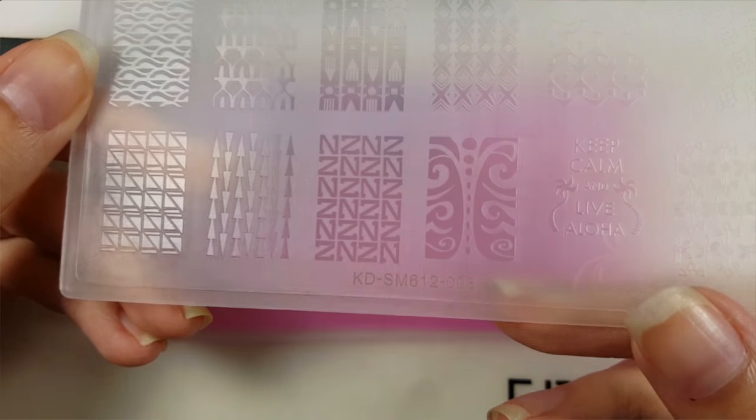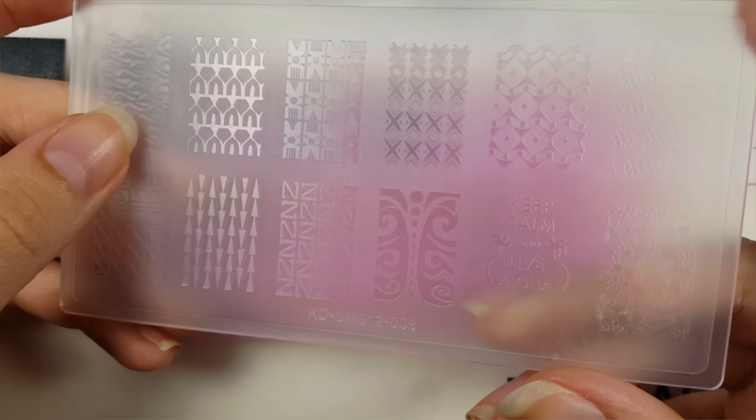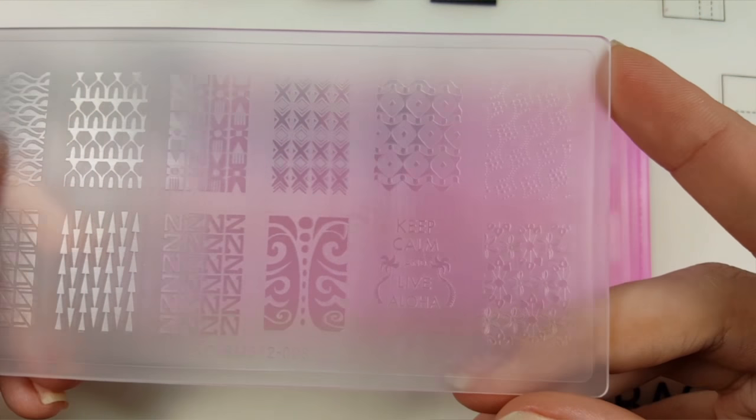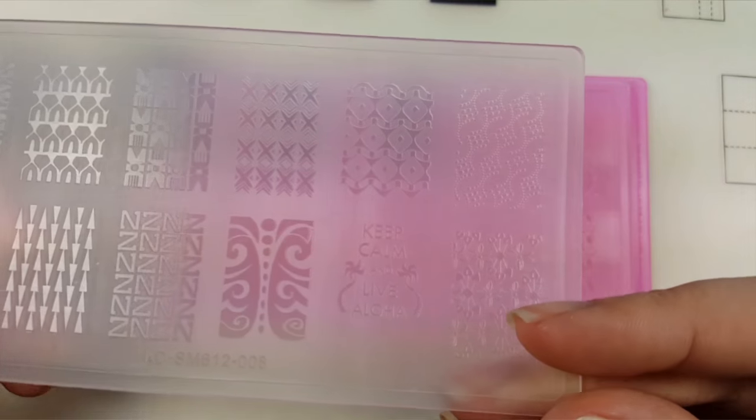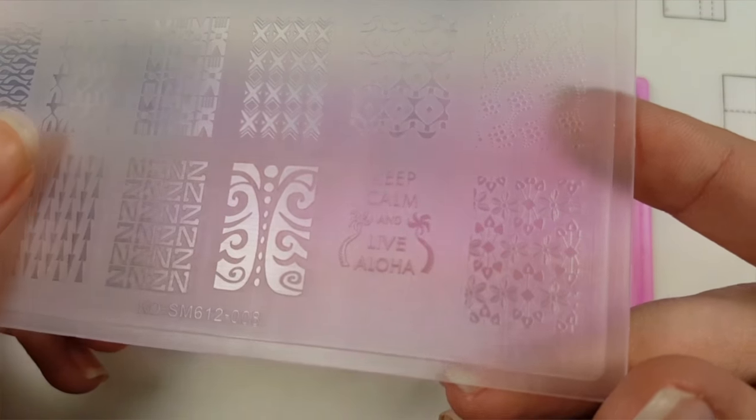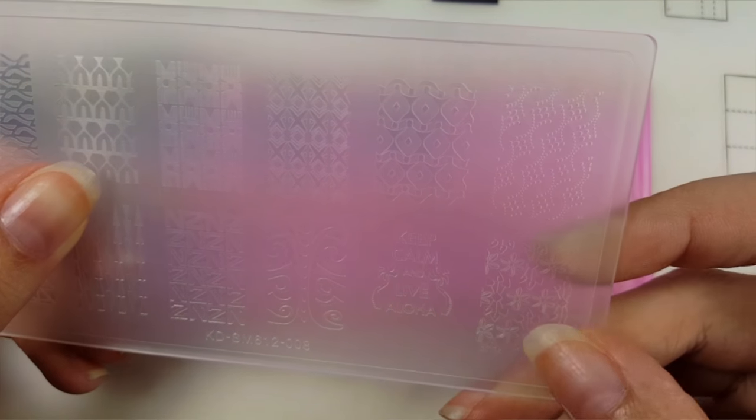Here we have plate number eight and this is just a whole bunch more of your geometric patterns. It says Keep Calm and Live Aloha. And then over here you have kind of like flowers and arrows I'm thinking.